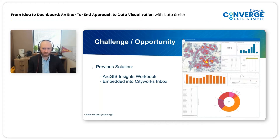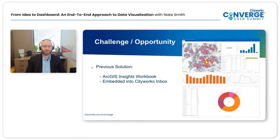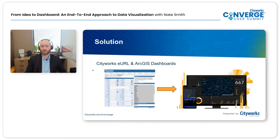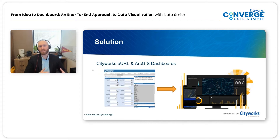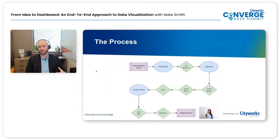In this one, we were asked these questions from our utilities director: where are all these service requests coming from? When do they come in? How much do they cost? What was the issue, and what was the cause of that issue? We had a solution in place that answered most of these questions — we were using an ArcGIS Insights workbook embedded into the director's CityWorks inbox. But the UI just didn't make sense for this director, and it wasn't the visualization or solution that was helping this individual solve those problems and answer those questions.